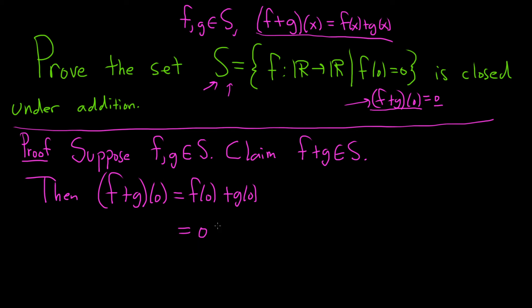But that's equal to 0 plus 0, and this is because f and g are in the set. So this is since f and g are in S. Right? Because f is in S, f of 0 is 0. Because g is in S, g of 0 is 0. And that's equal to 0.